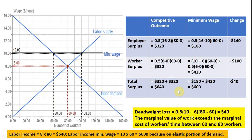The minimum wage creates an inefficiency: total surplus falls by $40, which is the deadweight loss. We can directly calculate this as the area of the triangle between the demand and supply curves from 60 to 80 workers, giving $40. Intuitively, the marginal value of work — the marginal revenue product given by the height of the demand curve — exceeds the marginal cost of workers' time, their reservation wage given by the supply curve. These workers provide more value than cost, but the minimum wage prevents them from being hired.